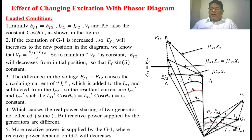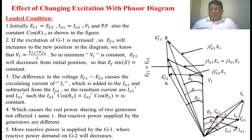Now we are completing the remaining vectors. From the tip of VT, draw a vector up to EF1 dash that is equal to IA1 dash times Zs1, which is perpendicular to IA1 dash. From the tip of VT, draw a vector up to EF2 dash, equal to IA2 dash times Zs2, perpendicular to IA2 dash. From this phasor diagram, we can observe that the magnitude of the current supplied by the second generator decreases and its angle also decreases from theta to a new theta. The current supplied by the first generator increases to IA1 dash and its angle increases to a new theta.